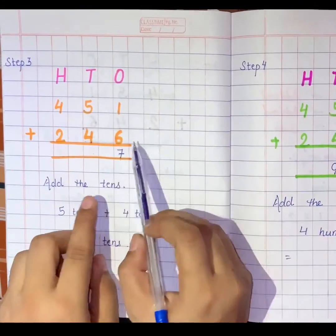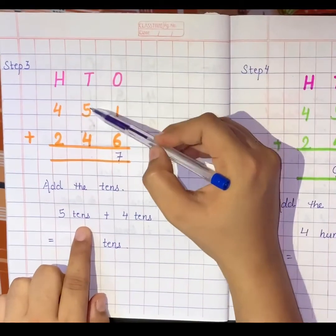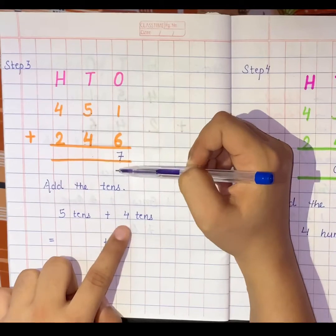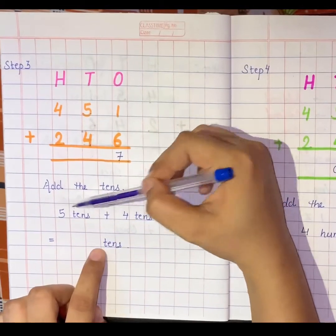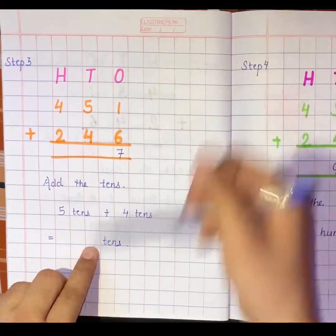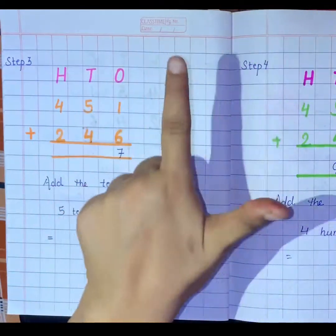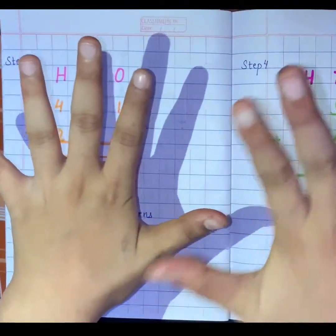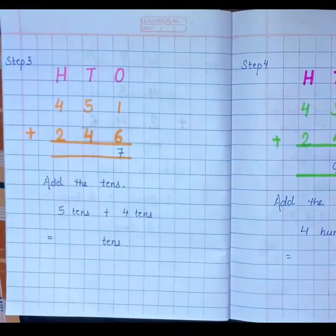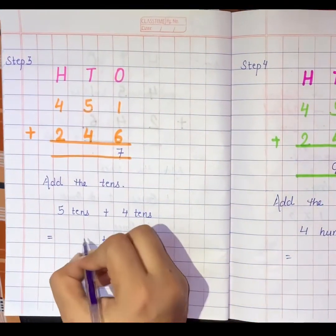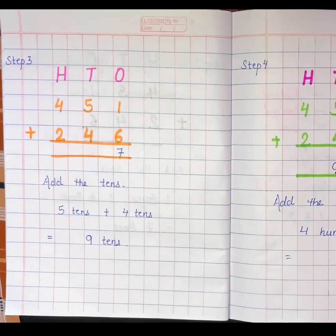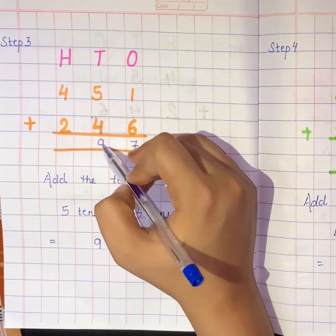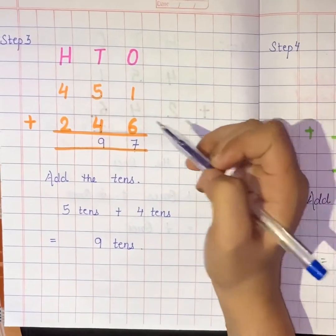Let's add the tens place. Under tens place we have 5 tens and 4 tens. 5 plus 4: counting — 1, 2, 3, 4, 5, then 1, 2, 3, 4 — total is 9. So 5 plus 4 equals 9.